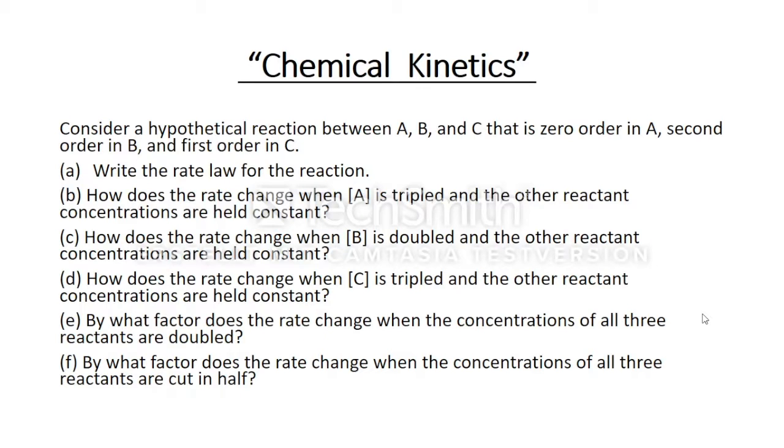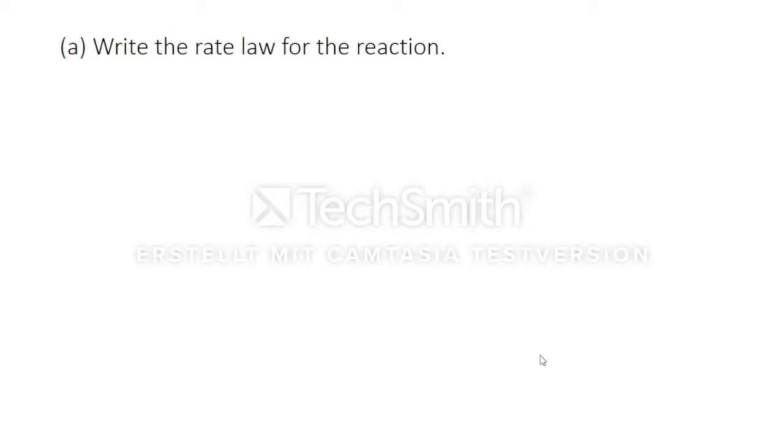This exercise is about chemical kinetics. Let's consider a hypothetical reaction between A, B and C that is zero order in A, second order in B and first order in C. Firstly, we need to write down the rate law for the reaction.